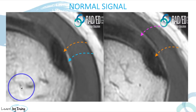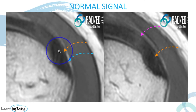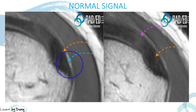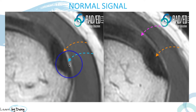The normal signal within a rotator cuff tendon is black on PD, PD fat sat, or T2. The orange arrow here is pointing to that low signal seen within the rotator cuff tendon. The other important thing about a normal tendon is to look at this interface — the edge of the bursal surface fibers is nice and sharp, with no irregularity. That becomes important when we talk about fraying of the tendon.